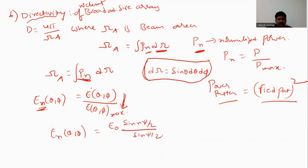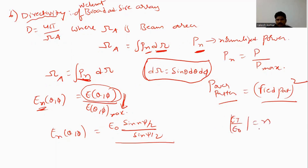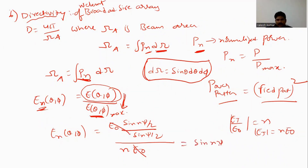The maximum electric field Et divided by E-naught is equal to N. So the maximum electric field is equal to N times E-naught. Therefore E-naught will cancel out in the normalized expression.